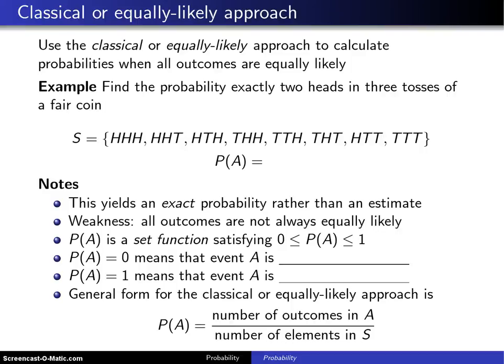The first two approaches to calculating probabilities, namely the relative frequency approach and the subjective approach, only give you estimates for probabilities. They do not give you the exact probability.